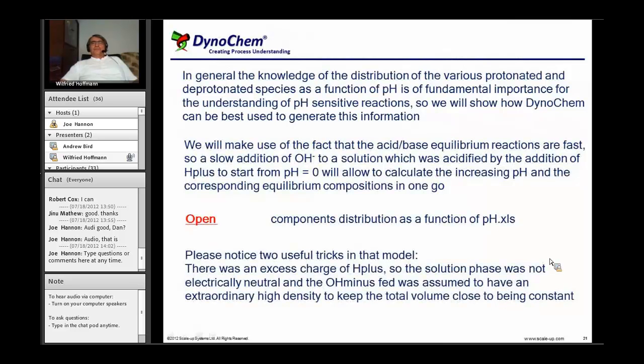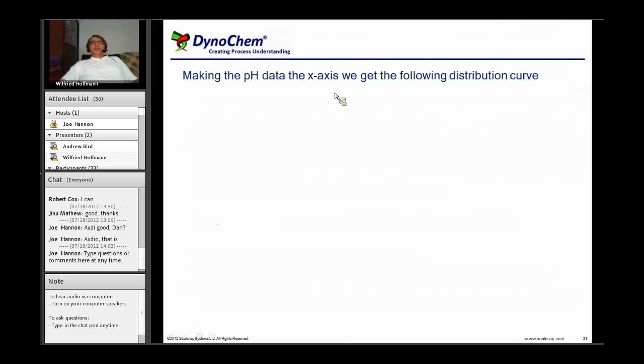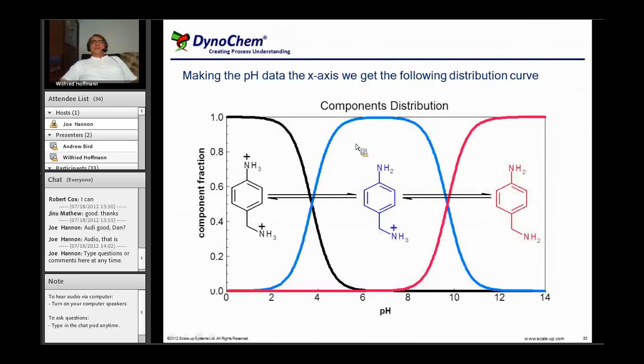These are the tricks I have. Making the pH data the x-axis, we get the following distribution curve. Now you see where the species are. You see at the right-hand side where the alkaline region, high pH, both nitrogens are able to get product, so both nitrogens can attack the acetic anhydride. It's only a matter of the competing reactivity.